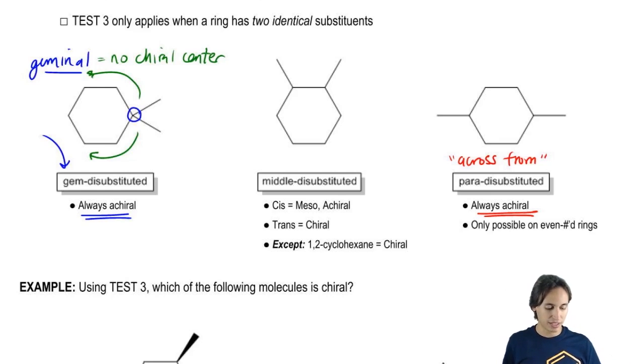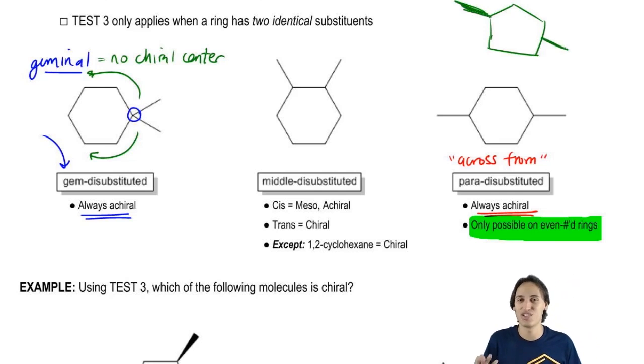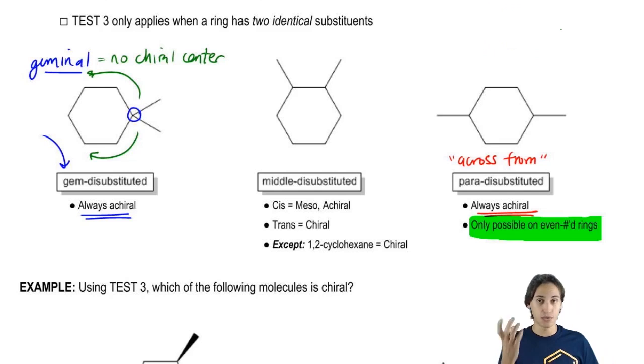Now something to keep in mind that you have to be careful about is that this is only possible on even numbered rings. The reason is because if you have, let's say, a five-membered ring, there are no two positions that are perfectly across from each other. This one, ideally the position that would be across from it would be here, but there's no position there. So this is only possible on even-membered rings, like four-membered, six-membered, eight-membered, stuff like that.